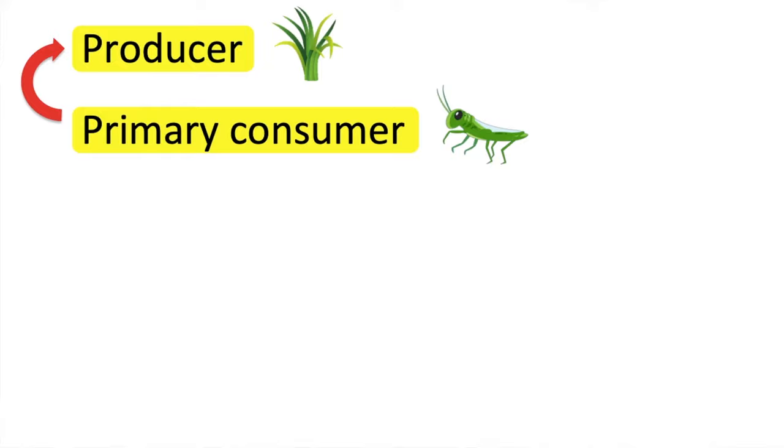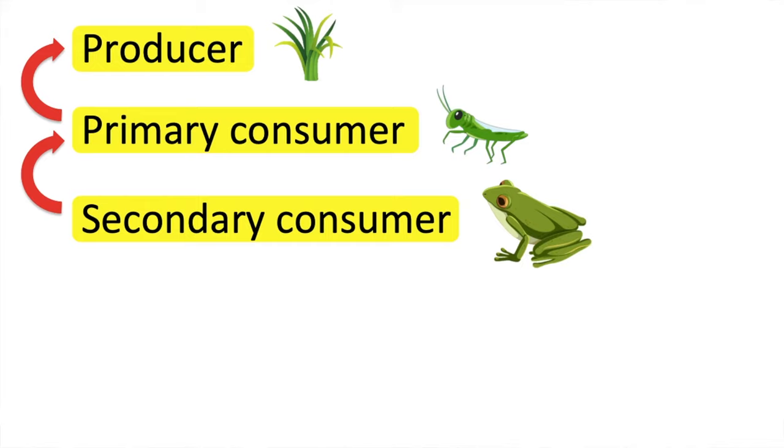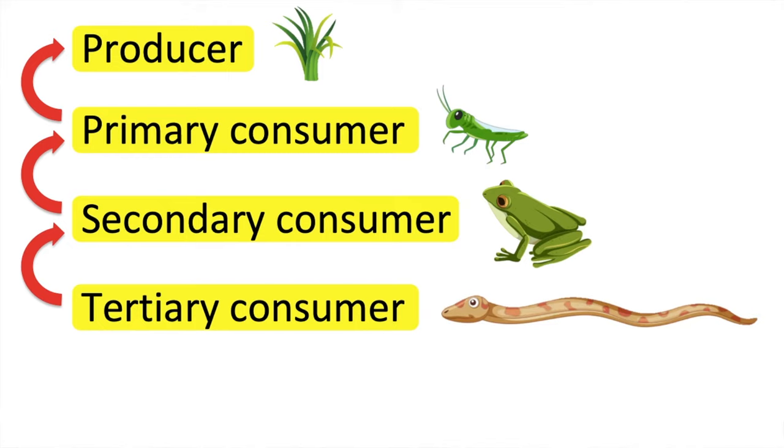The secondary consumers are the animals that eat the primary consumers. The tertiary consumers are the animals that eat the secondary consumers. When all living things die,